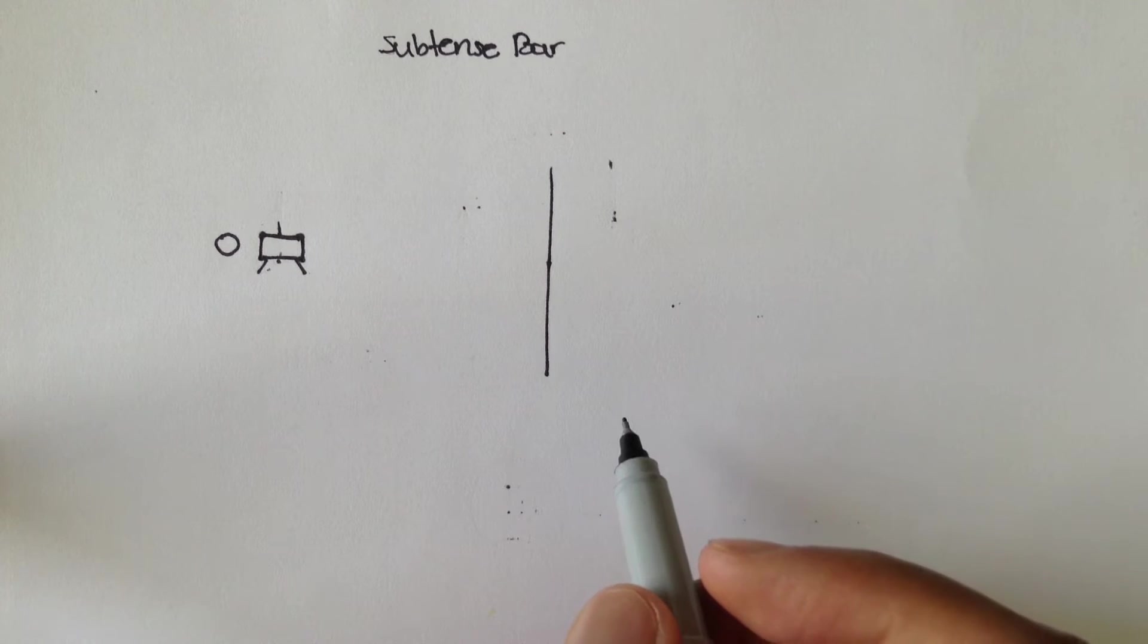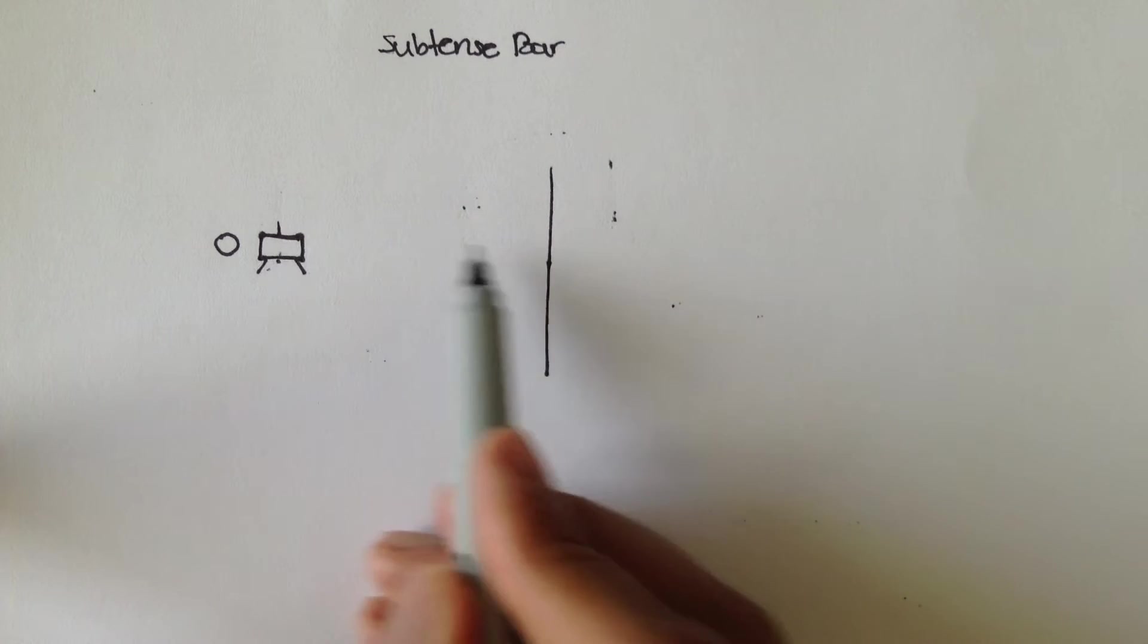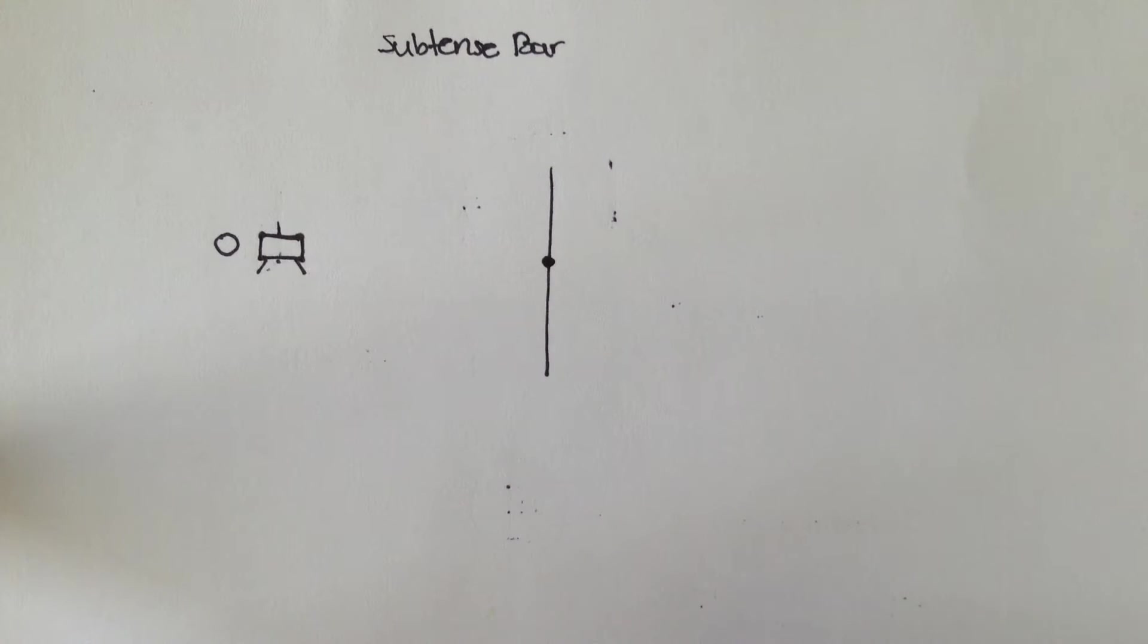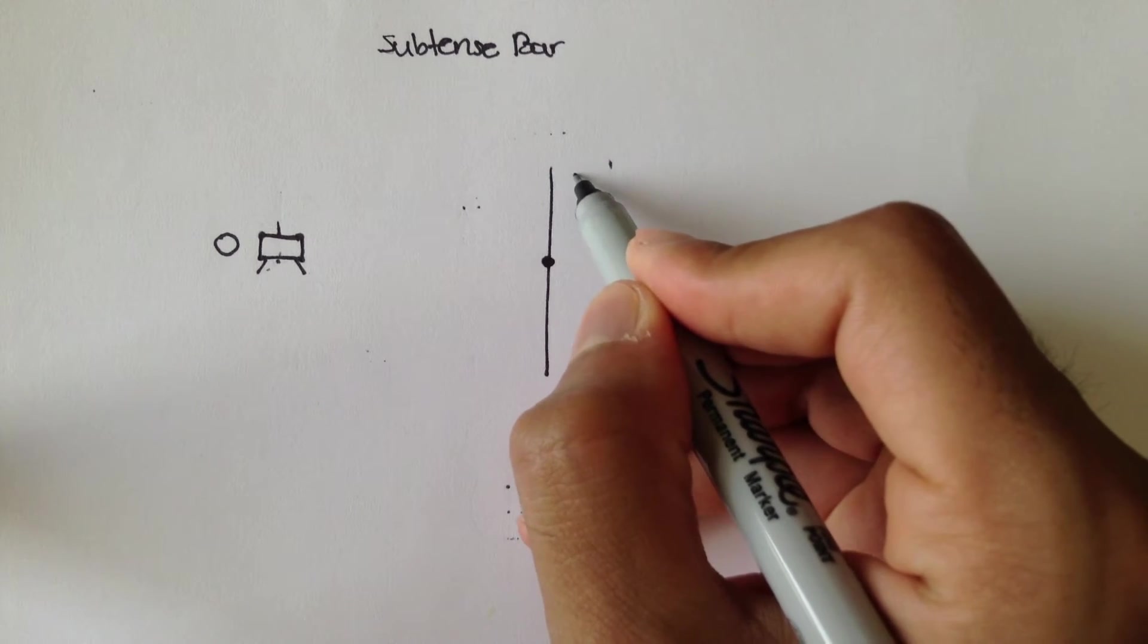Subtense bars are good to figure out approximate horizontal distances from the instrument to whatever point you want to know the distance to. And in our case, this subtense bar is...